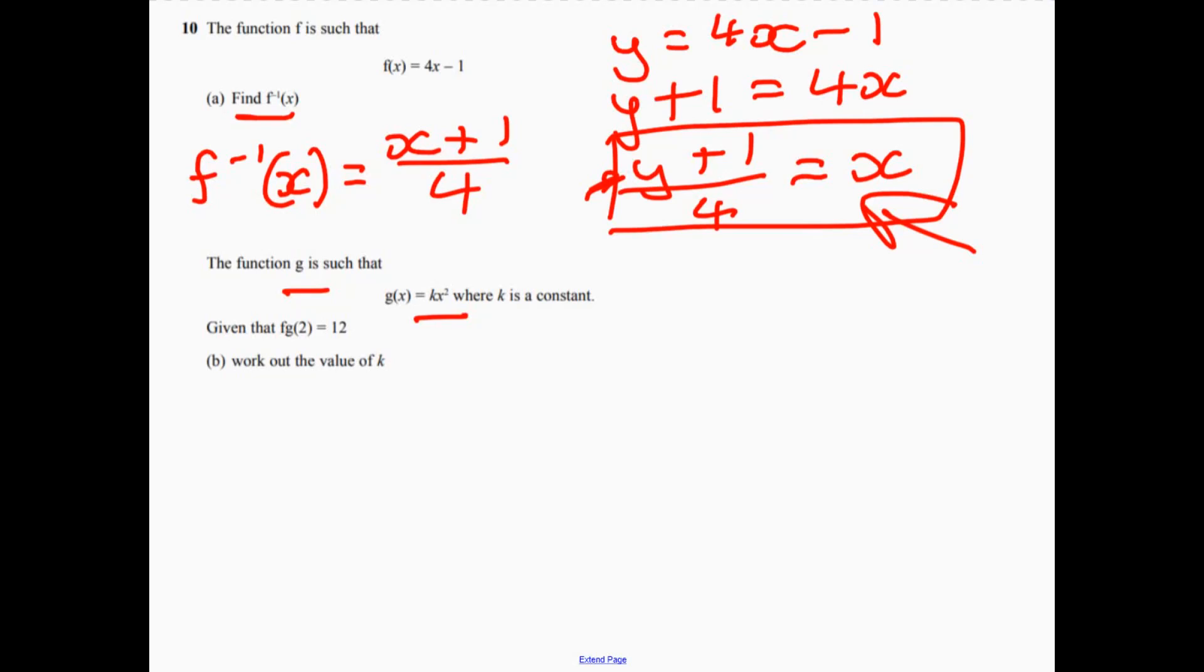Well, g of 2, we're going to have k times 2 squared. So what we're doing is we're just trying to work out what g of 2 is equal to. I've just substituted in the 2 for the x. So 2 squared is 4, so that's 4k.